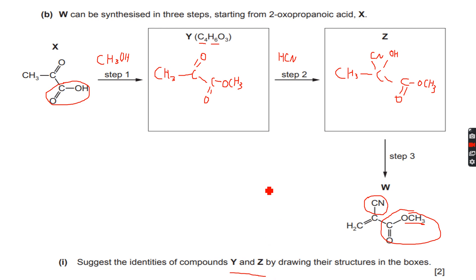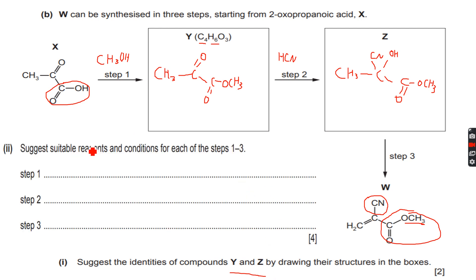Now the second question is: suggest suitable reagents and conditions for each of the steps 1 to 3. Let's start with step 1. Step 1 is an esterification reaction, and for step 1 the reagent we have used is CH3OH, as I have written over here. The reagent is CH3OH methanol, and for this reaction we use concentrated H2SO4 as a catalyst and we use a high temperature, so let's just say we heat the reaction.